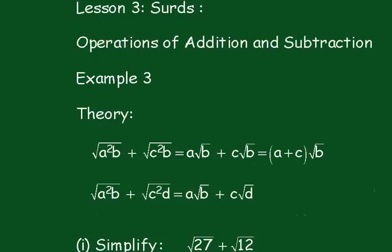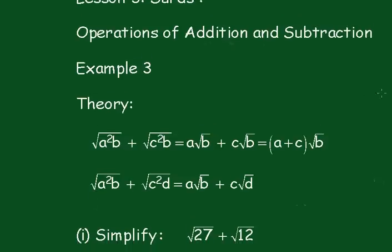Lesson 3. Operations of Addition and Subtraction. Example 3. Now this is a theory here. The square root of a squared b plus the square root of c squared b can be written as, as before, a root b plus c root b.